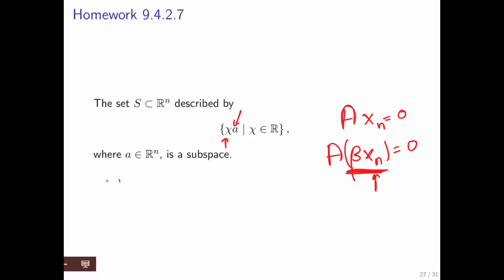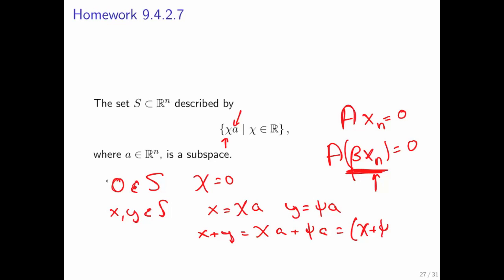The way you would prove that is, first of all, you know that 0 is in this set because you can pick chi to be 0. And you know that if x and y are in the set, then x is some multiple of a, and y is some other multiple of a. But x plus y is equal to chi a plus psi a, which is equal to chi plus psi times a.